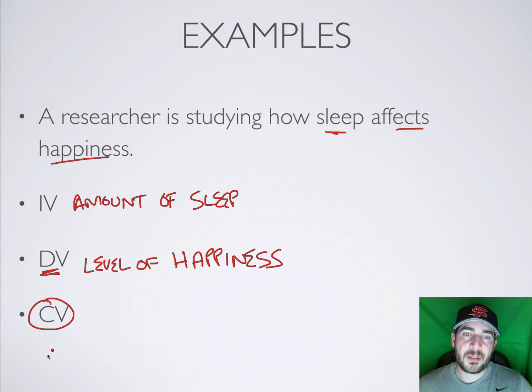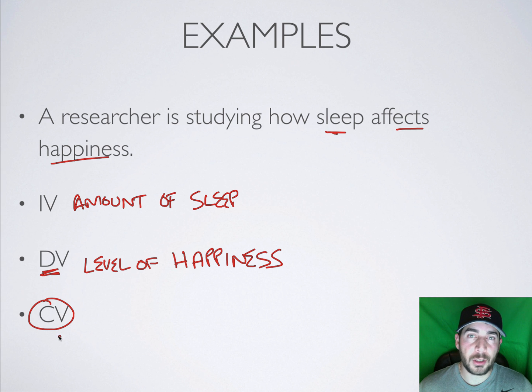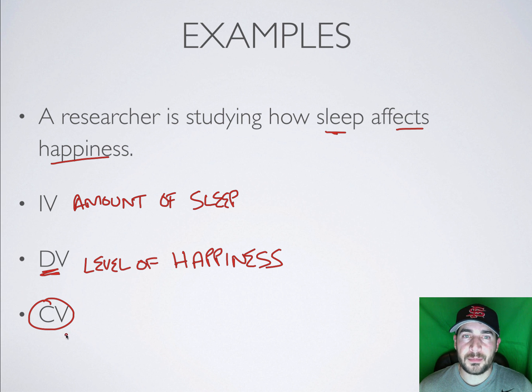Those are the three types of variables that you're going to encounter. They're all very important — they show up on the FRQs all the time. Go back and practice, and good luck!